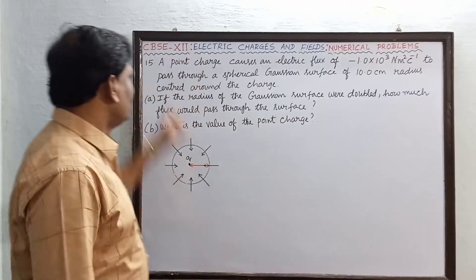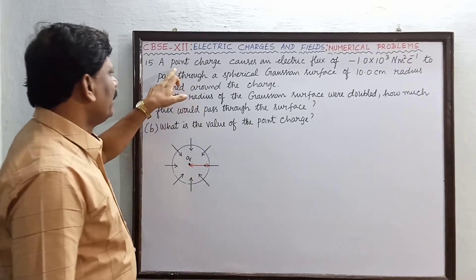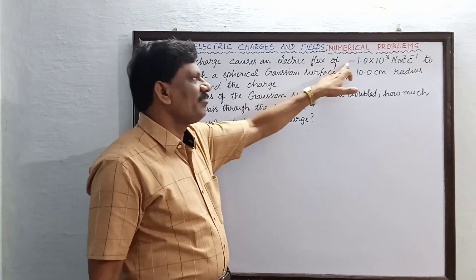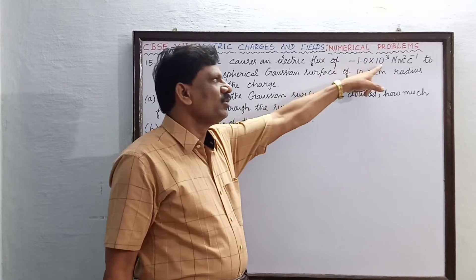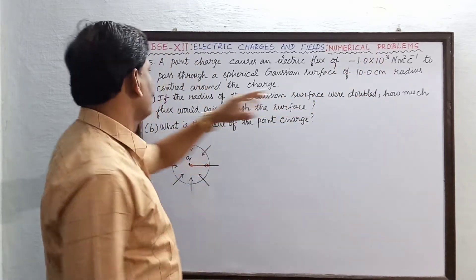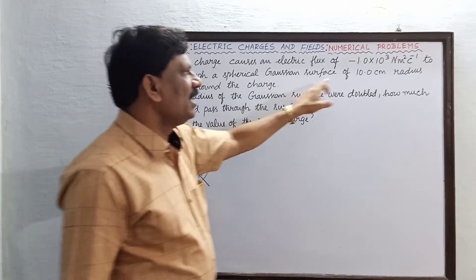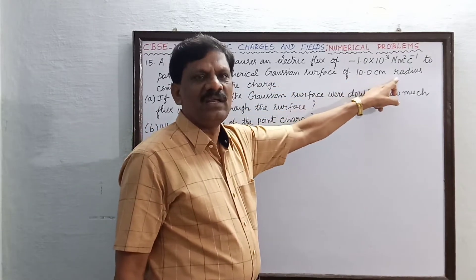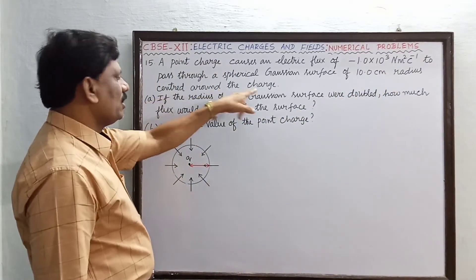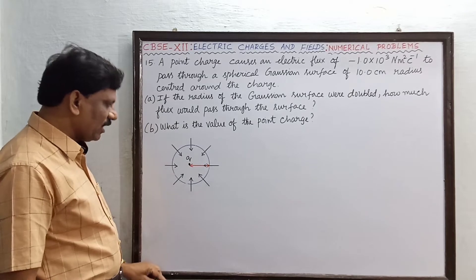Hi students, problem number 15. A point charge causes an electric flux of minus 1 into 10 power 3 Newton meter square per coulomb to pass through a spherical Gaussian surface of 10 centimeter radius, centered around the charge.